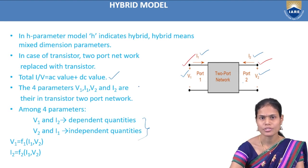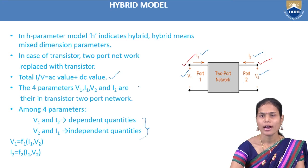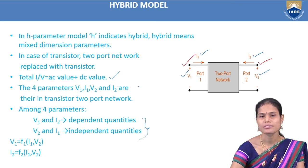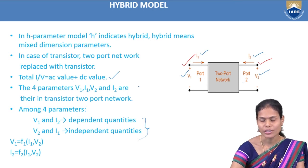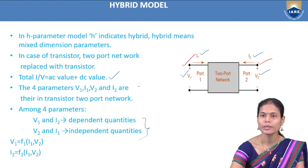Different combinations of the parameters give different parameter sets. If we take V1, I1 and V2, I2, we get Z parameters (impedance parameters). Another combination gives admittance parameters. To get hybrid parameters or H parameters, we take input voltage and output current as dependent parameters, and output voltage and input current as independent quantities.